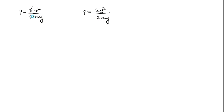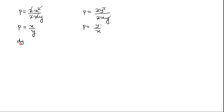On simplification, the 2X cancels in the first case and 2Y cancels in the second. So we have P equal to X by Y, and the other value is P equal to Y by X. Since P means dy by dx, we get dy by dx equals X by Y, and dy by dx equals Y by X.